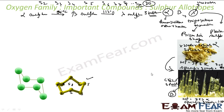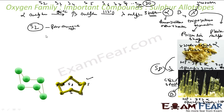Both alpha and beta sulfur are S8 with a puckered crown-shaped structure. If you heat sulfur to a very high temperature of almost 1000 Kelvin, what you get is S2 — diatomic sulfur vapors. Lambda sulfur also converts into S2 at high temperature as the ring breaks.